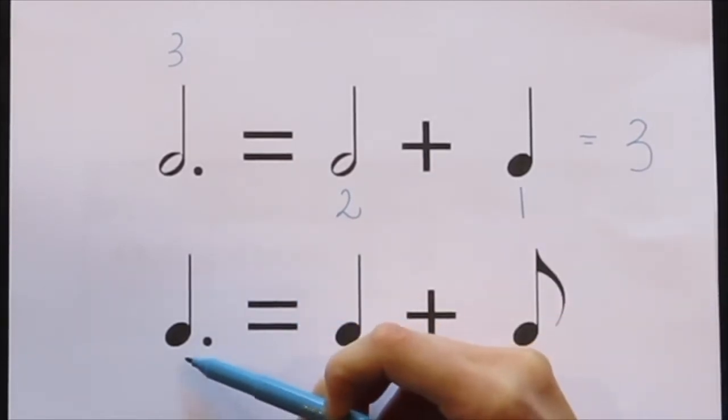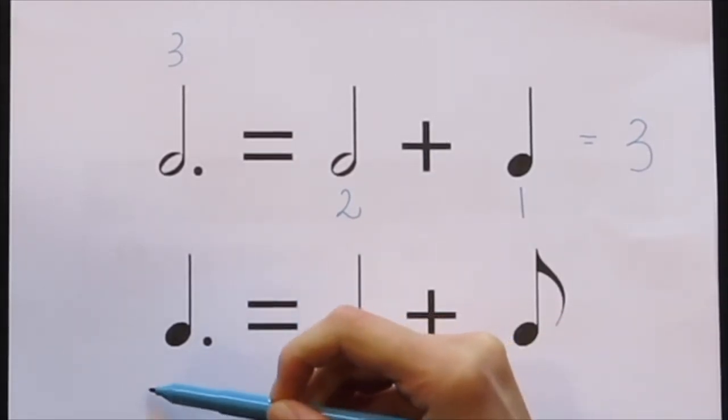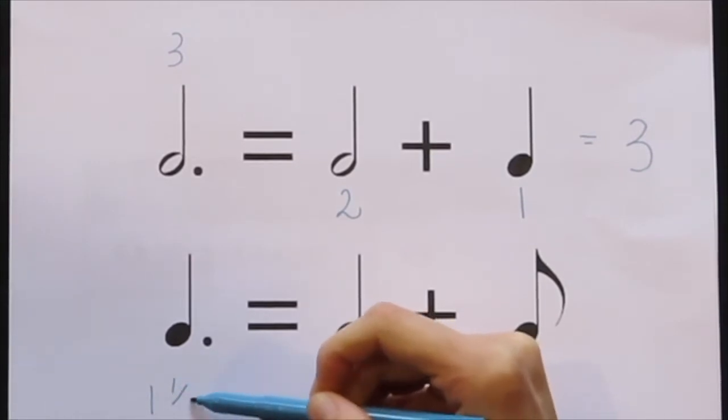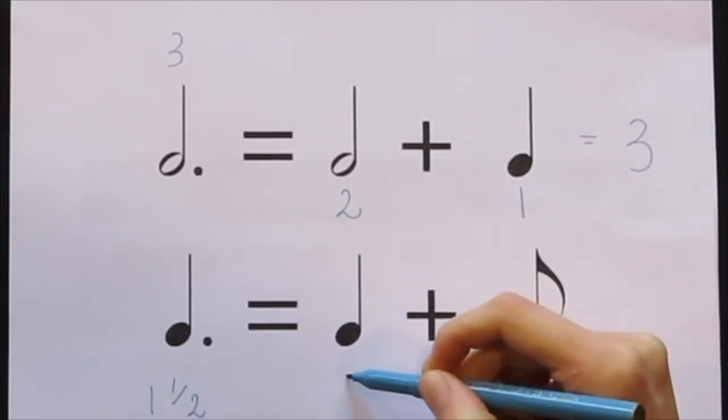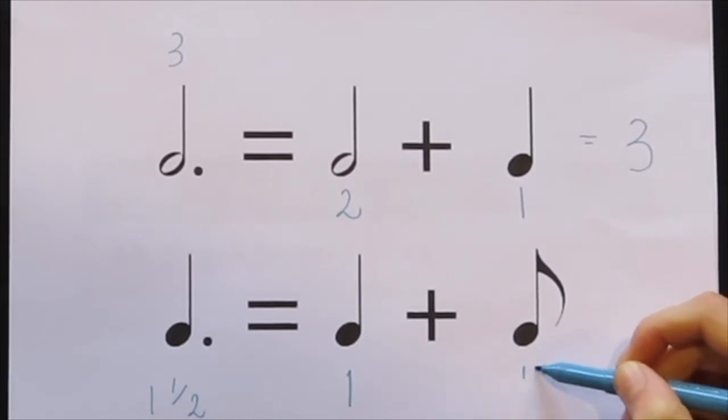If we take a crotchet and add a dot to it, the new note will have a value of 1.5 beats. 1 plus half a beat equals 1.5.